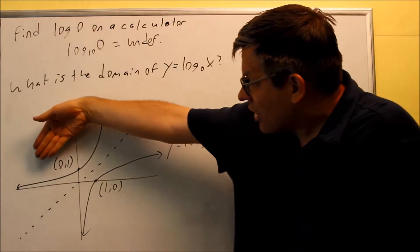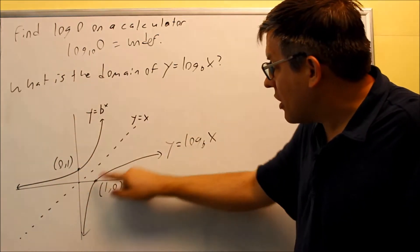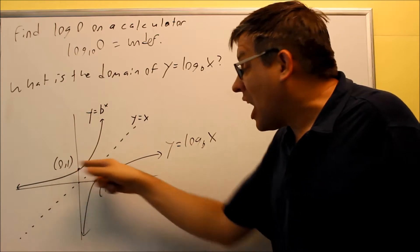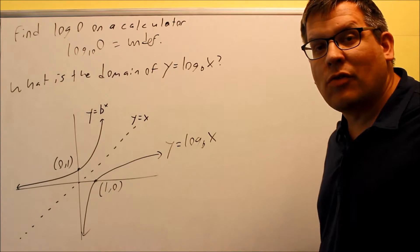So again, you can see that if I take this part and fold it over the line y equals x, this part's going to lay perfectly on top of that one. I have my opposite x and y values. So this right here is the correct graph of y equals log base b of x.